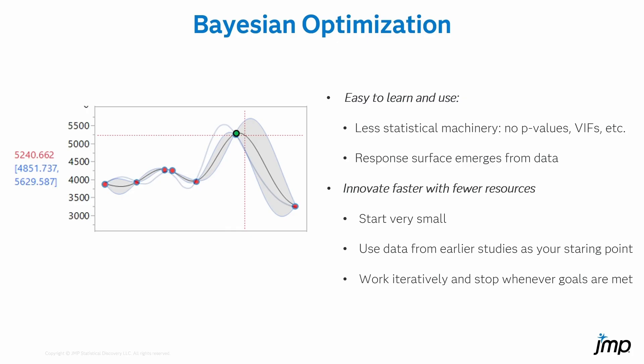If the data have aliased effects or multicollinearity, Bayesian optimization will just tell us an intelligent way to break that data defect at the next step. Many of the complexities of dealing with mixtures and constrained regions also just disappear with Bayesian optimization.